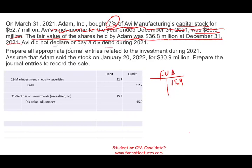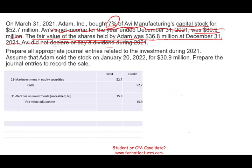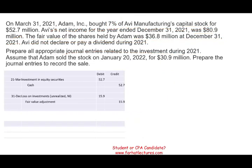Avi did not declare a dividend. Even if they did declare a dividend, we would debit cash and credit dividend revenue for whatever dividend we received. But they did not declare, which makes it easier for us. So those are all the journal entries for 2021. Now let's take a look at what happened in 2022.